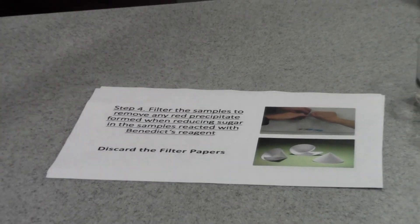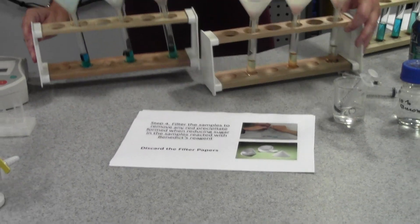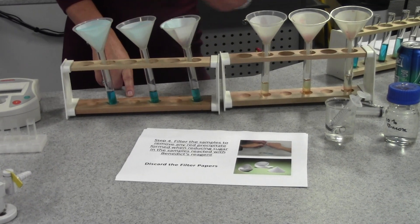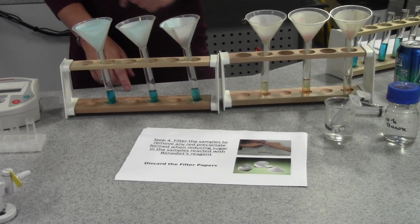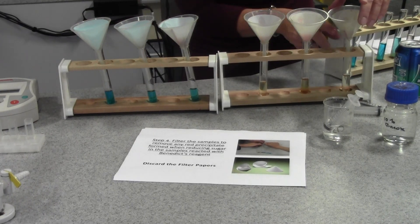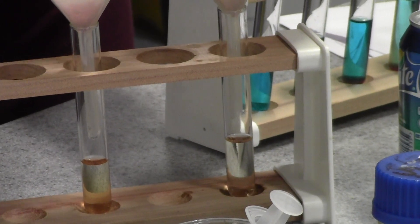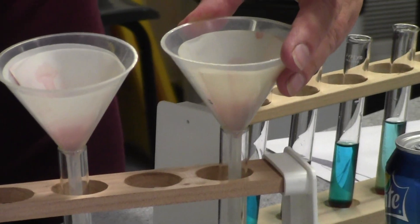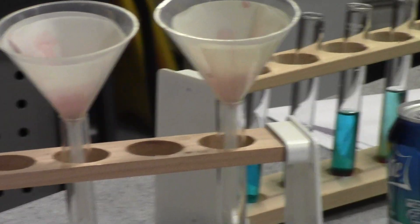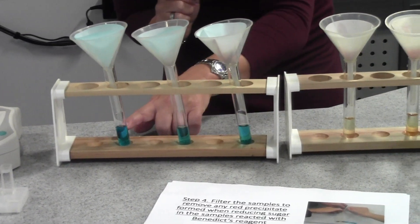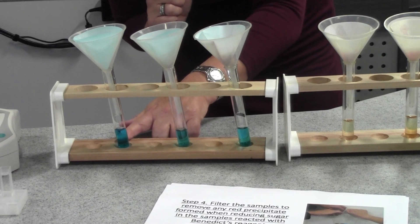I've already done that earlier and this is our range of solutions, the results of the Benedict's test once we've filtered them and you can actually clearly see here that the solution that had the highest concentration of glucose actually has a large amount of red precipitate that's collected in the filter paper there and if we look at the colours of the solutions you can see there's a range from sort of blue here that looks like the original Benedict's.